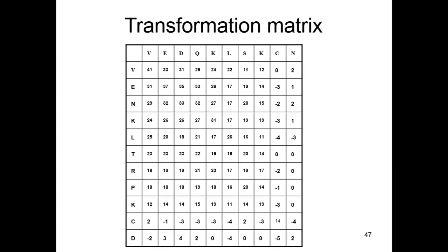Since we need to find an optimal alignment, we basically need to know how much the best alignment can possibly score. Therefore, at the end of the transformation process, we know that if these two sequences are aligned, the alignment can have the best score of 41, not more than that. That is why we generate the transformation matrix. The rules that we were following to populate this transformation matrix constitute the steps involved in the Needleman and Wunsch algorithm.